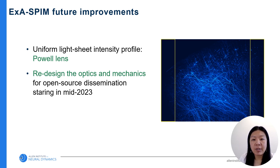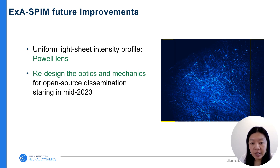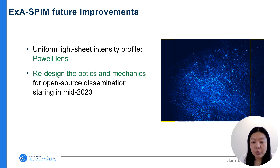This is the current status of our ExaSPIM system. In the future, we plan to use a Powell lens instead of a cylindrical lens to improve the uniformity of the light sheet — the current cylindrical lens profile produces much dimmer edges compared to the center. We will also redesign the optics and mechanics so the system is easier to share with the whole community, and we look forward to that happening later this year.